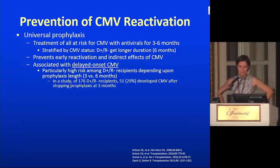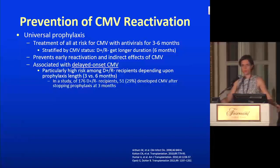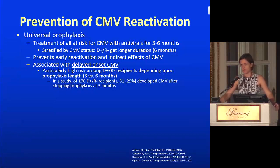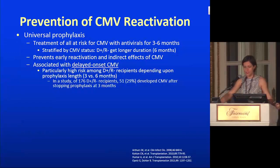CMV risk is also high in the first few months after treating rejection, so you need to think about reinstituting prophylaxis. Most US centers use universal prophylaxis — treating everyone at risk for CMV for three to six months, stratifying by risk. D+ R- patients get longer prophylaxis than D+ R+ or D- R+. An important study looked at three versus six months of prophylaxis. Of 176 D+ R- patients who got three months of prophylaxis, 51 — or 29% — developed CMV after prophylaxis stopped. This rate was high enough that most centers now use six months for these patients.